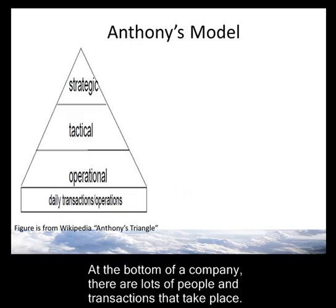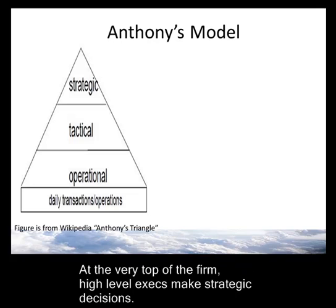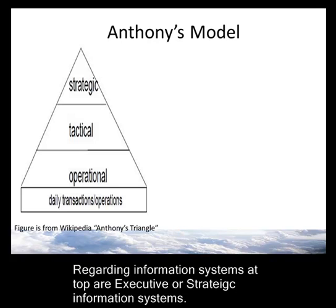It's really simple and it makes a lot of intuitive sense. At the bottom of the company, there are lots of people and transactions that take place. As you move to the middle level of the firm, fewer people have tactical jobs as managers, making decisions that determine how things will run. Then at the very highest level — the strategic level or the C level — CEO, CFO, CIO level individuals will determine the strategic initiatives that make the company successful.